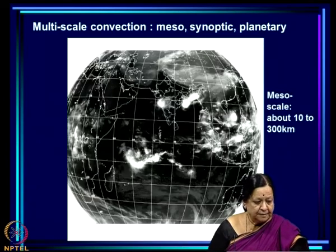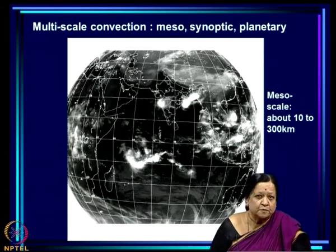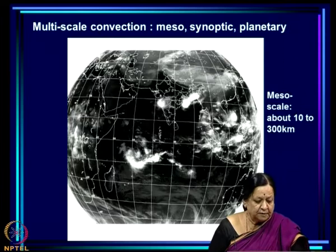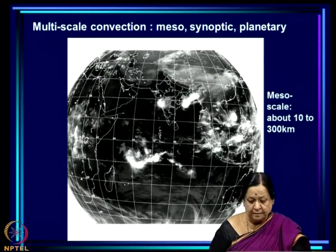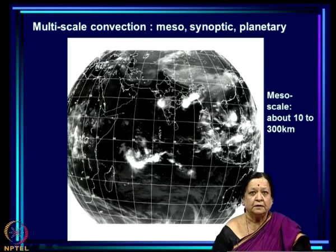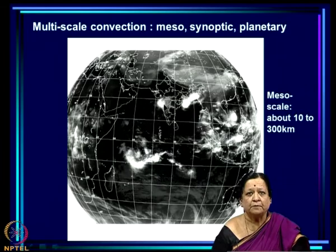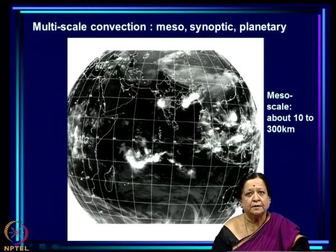Thanks to satellites, we can see examples of this very readily. This picture shows mesoscale convection on the west coast of India — a nice small blob. Notice this scale is about 1000 kilometers, and this blob is only about 200 kilometers in extent, isolated with clear sky all around it.